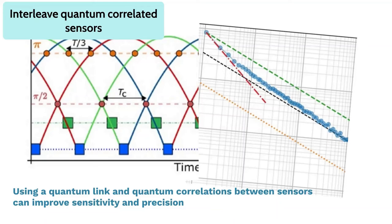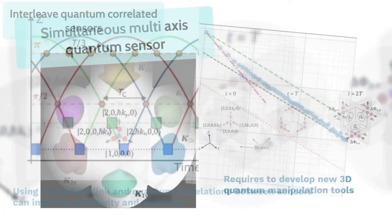For that reason, we want to create a quantum link between quantum correlated sensors and interleave the measurement between those sensors so that we can improve the sensitivity and the precision of those systems.